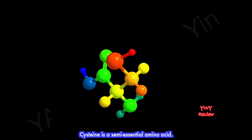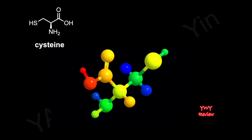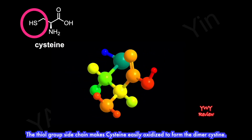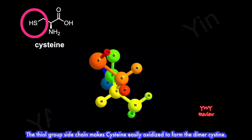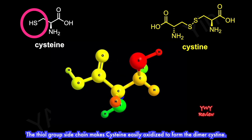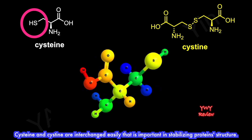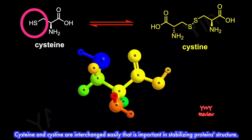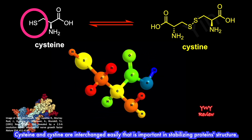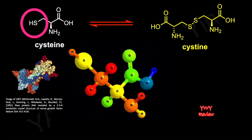Cysteine is a semi-essential amino acid. The thiol group sidechain makes cysteine easily oxidized to form the dimer cystine. Cysteine and cystine are interchanged easily, which is important in stabilizing protein structure.